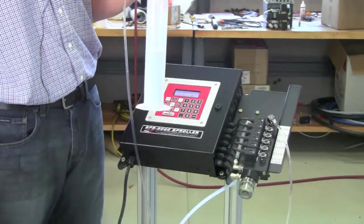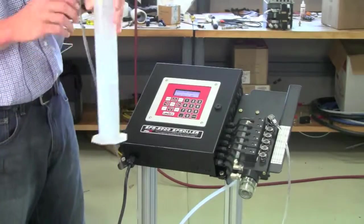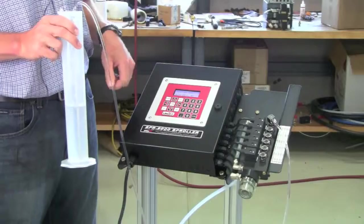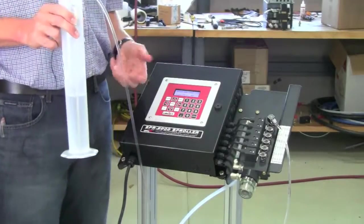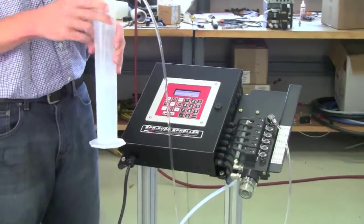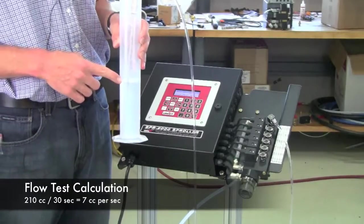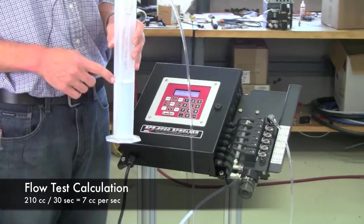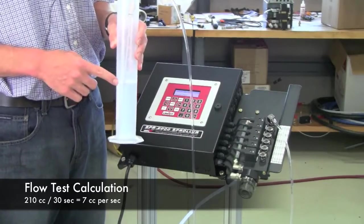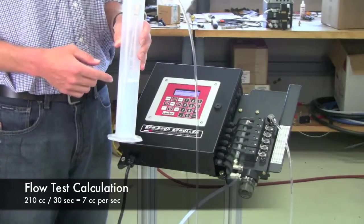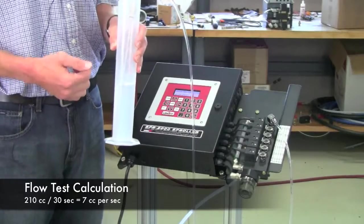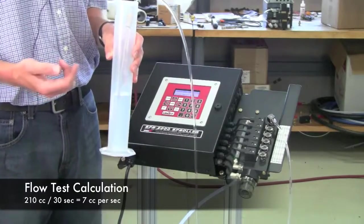One milliliter equals one cubic centimeter. So in the SPR2000 system, we ask for it in cubic centimeters per second, which is essentially how many milliliters you have. So we have 210 milliliters of fluid that we collected in the 30 second time period. So now we'll divide 210 by 30, and that will give us our flow rate per second.